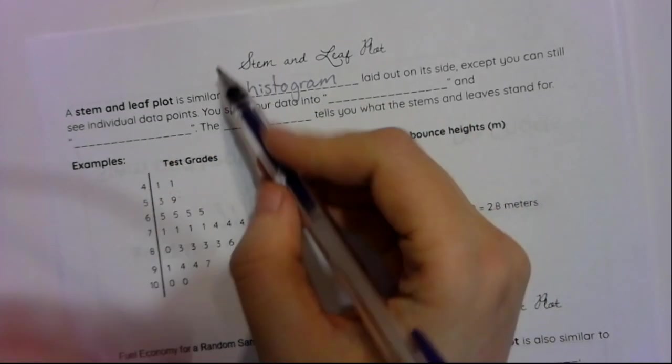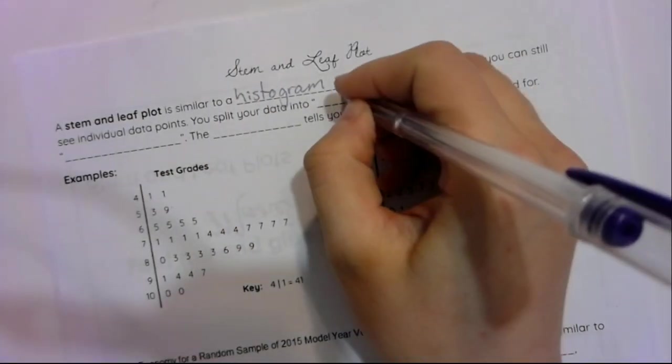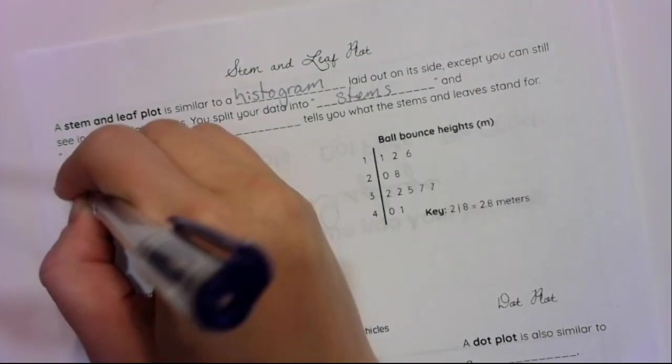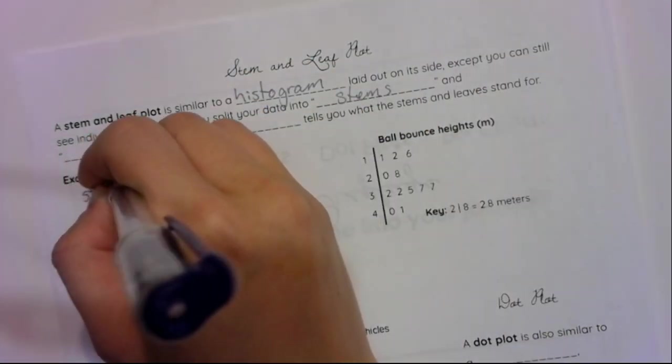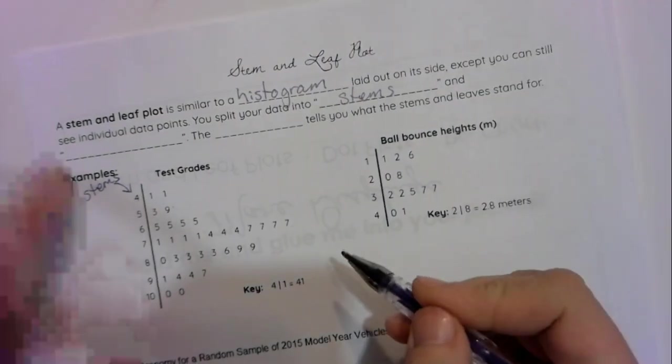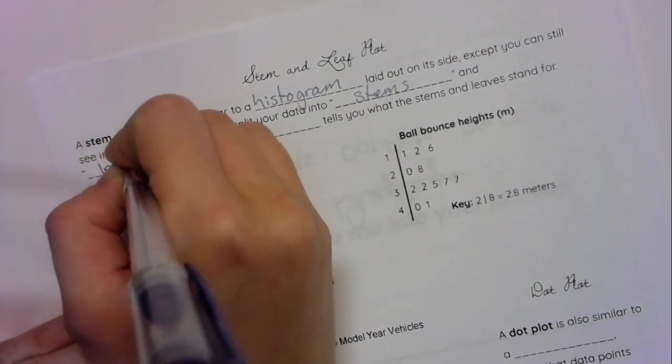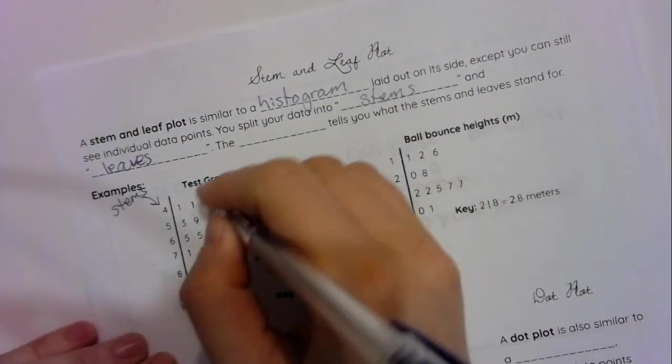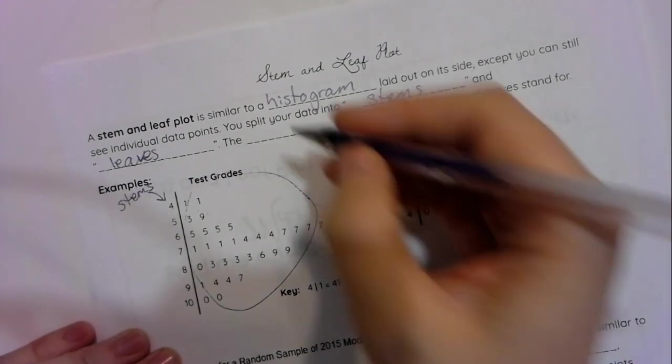It's called a stem and leaf plot because you split your data into stems, which are these. These are stems. And leaves, which are all of these. Those are the leaves.